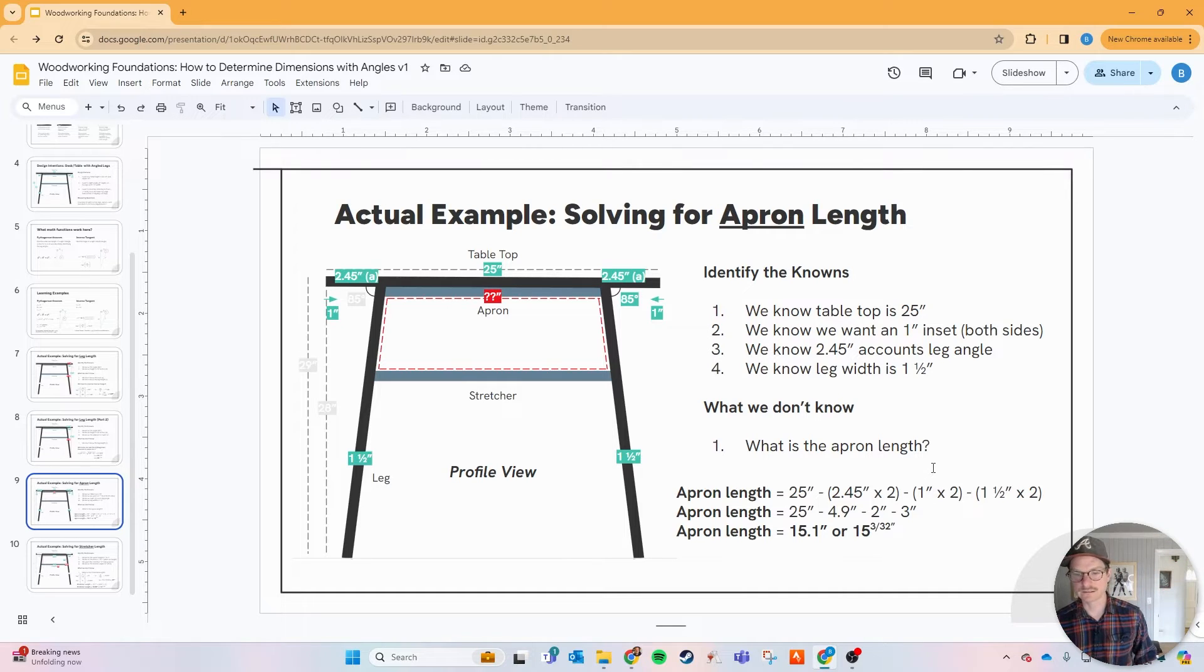What is the apron length? This is just subtraction here. We got the tabletop width minus the front and back leg insets of the table leg, so that's the 2.45 plus the 2.45, minus the one inch inset on the front and the back of the table, and then minus the one and one half inch on the front and back side of the table. When you subtract all that, that gives you 15.1 inches or 15 and 3/32nds. That is how long the apron needs to be.